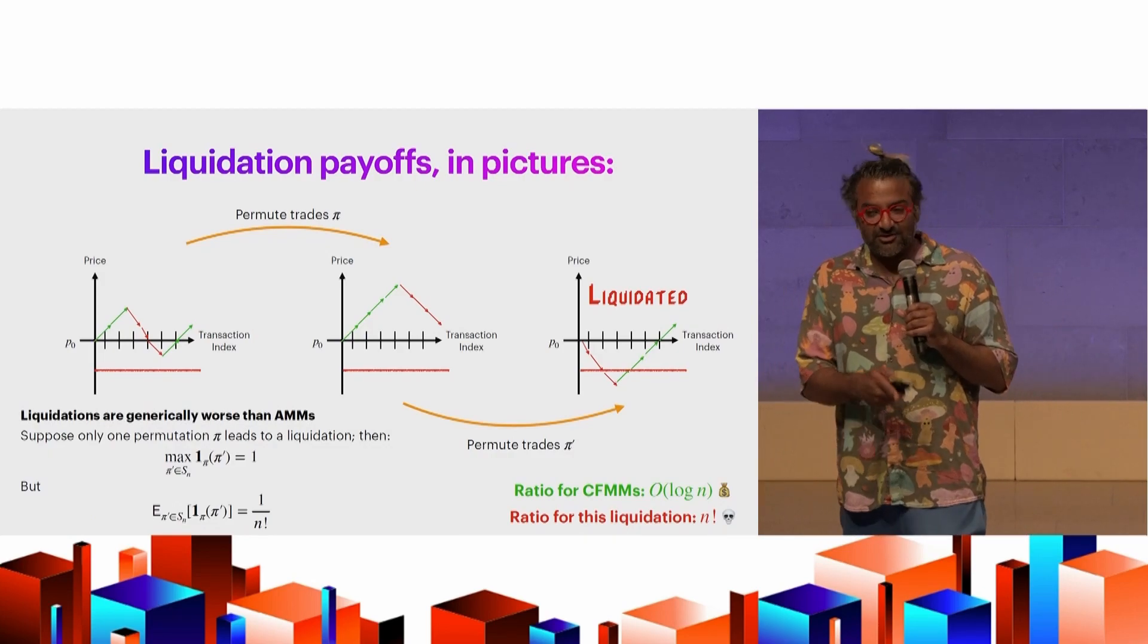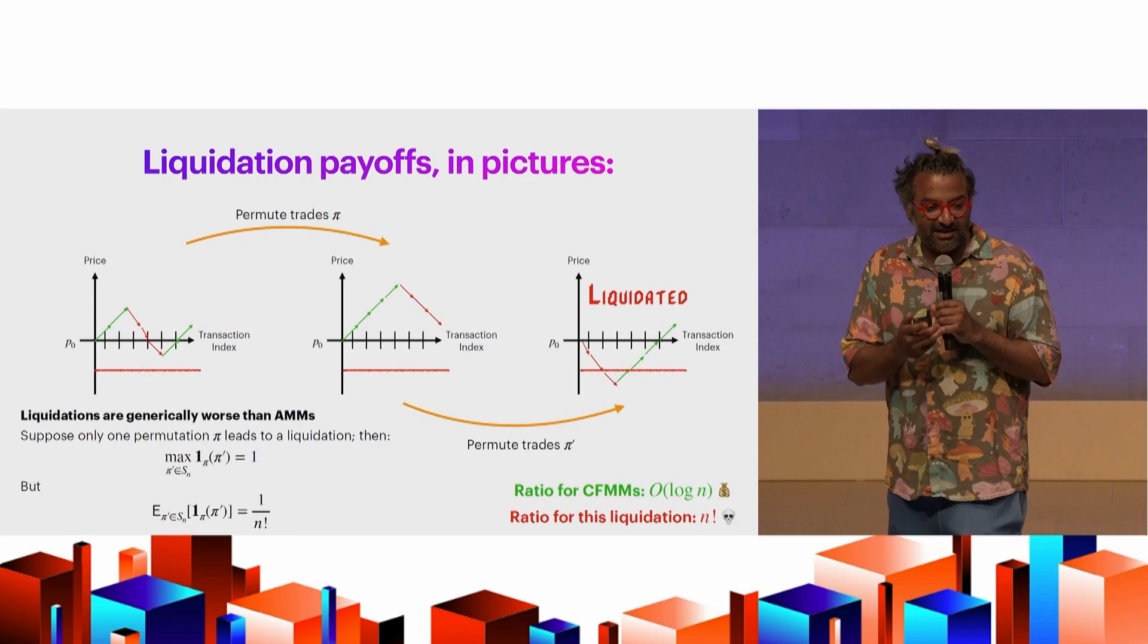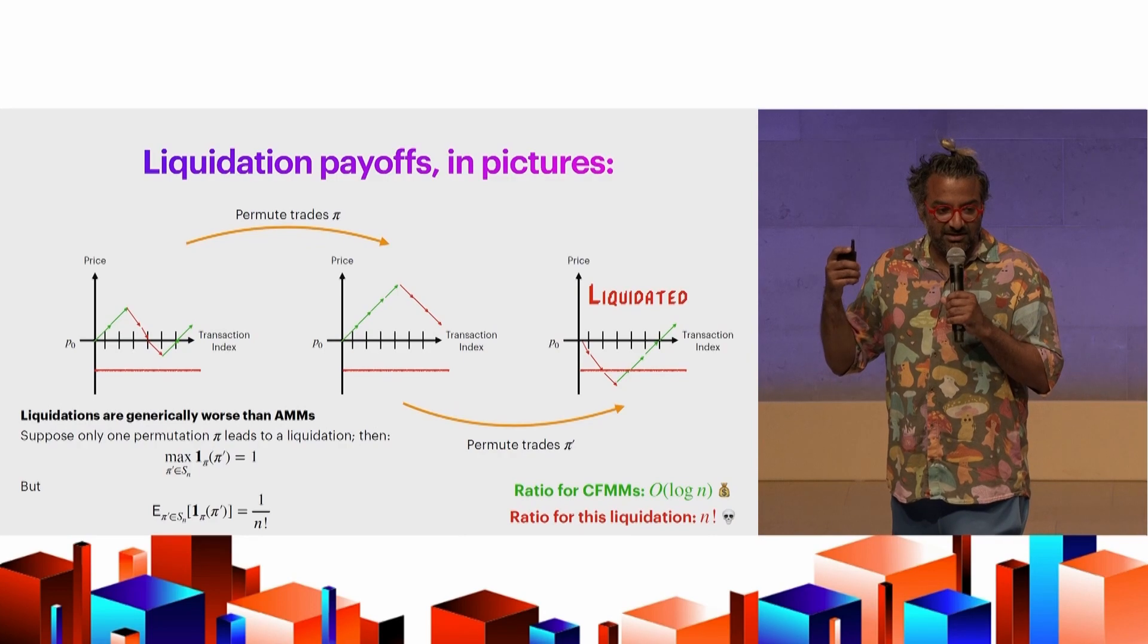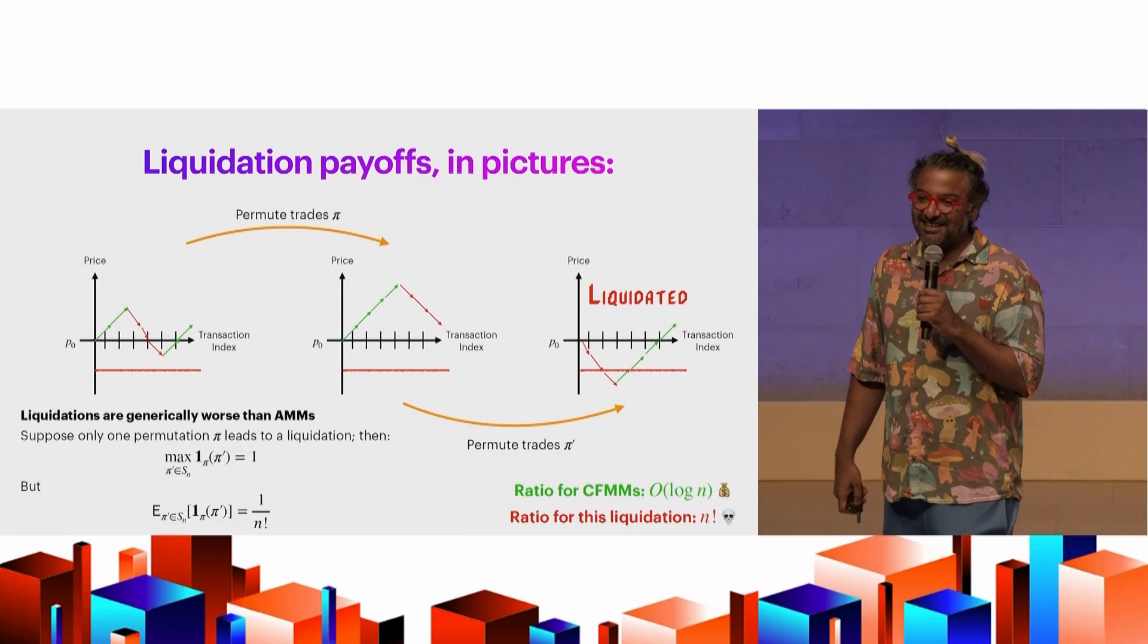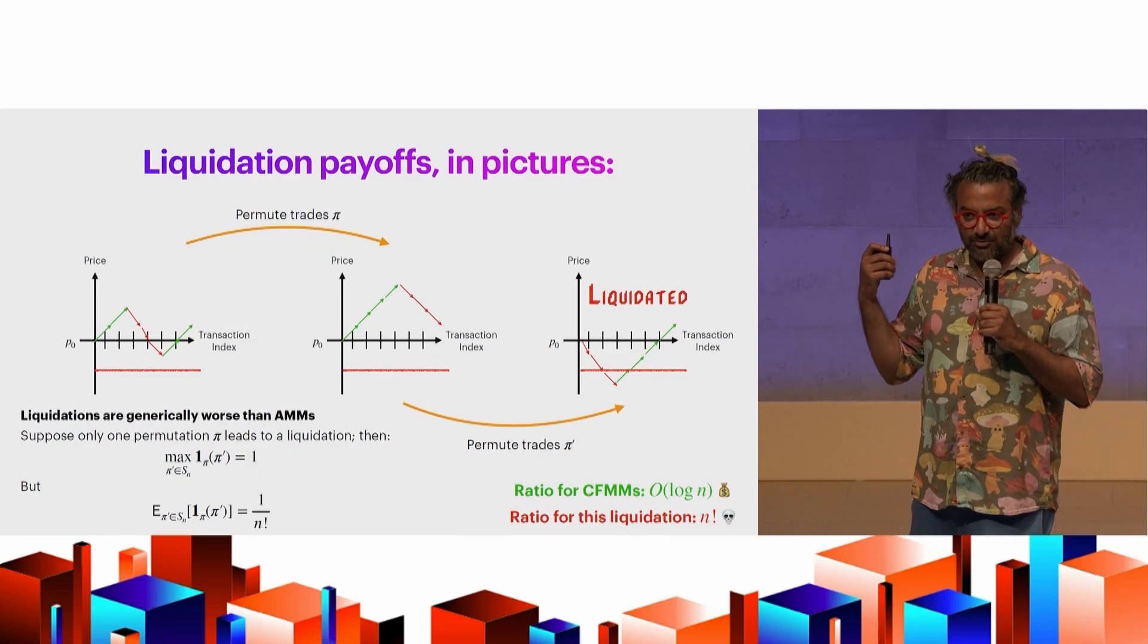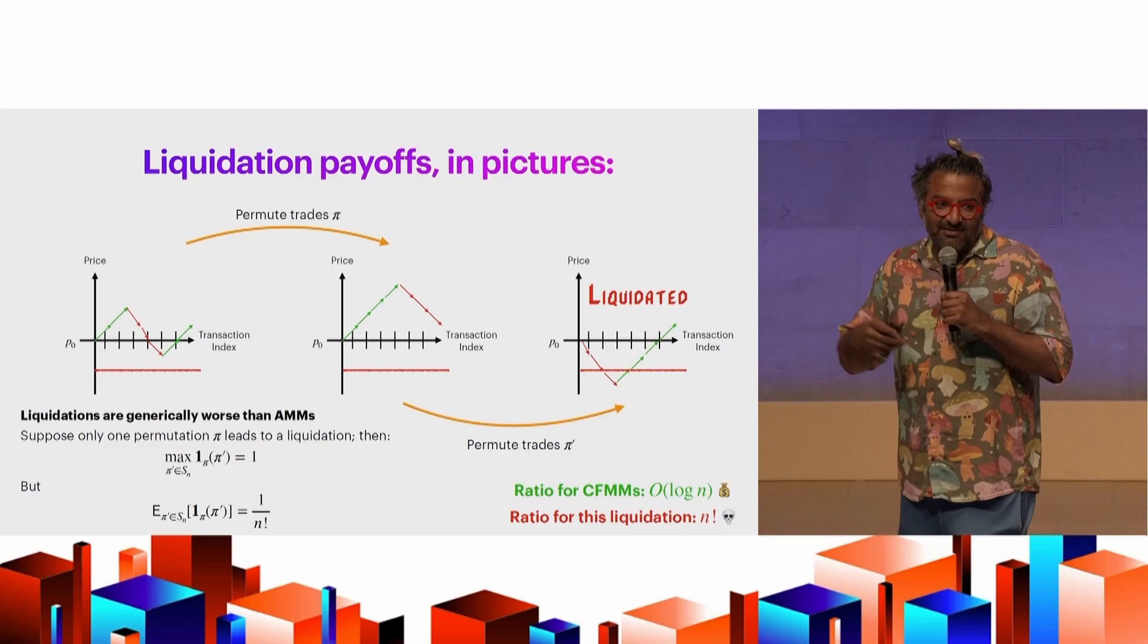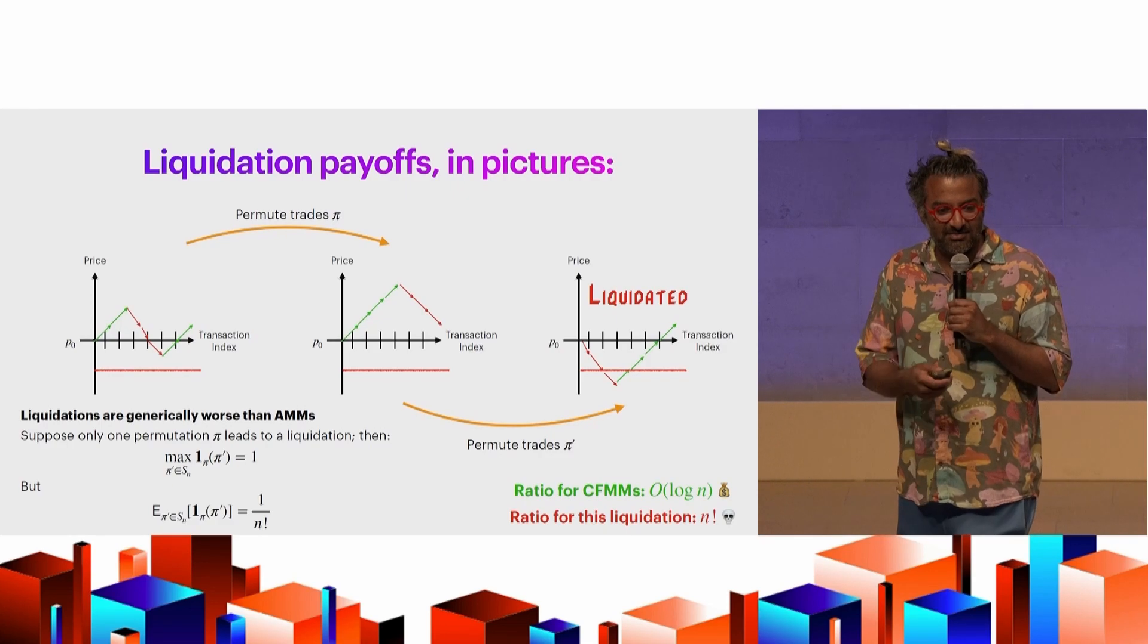But the interesting thing is the liquidations are much worse than the AMMs. In the AMMs, we showed this thing where it's bounded by log n. But in liquidations, I can construct something where it's actually the ratio of the worst case payoff to a user versus the average case is O of n factorial, which is obviously significantly worse. So that's not really an ideal thing. And again, a lot of the kind of things people have made and said that would fix and make things more fair don't solve this problem. Like, none of the ordering schemes in the communist column actually can correct this.